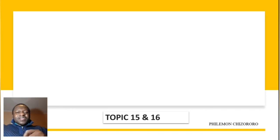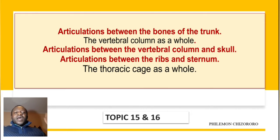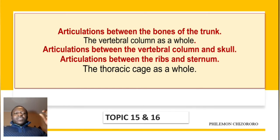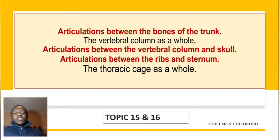Welcome. In this video we are going to talk about articulations between the bones of the trunk — the whole vertebral column. We'll talk about the articulations between the vertebral column and the skull, the articulations between the ribs and the sternum, and then we'll conclude by talking about the thoracic cage as a whole.